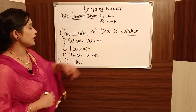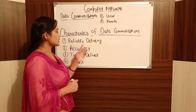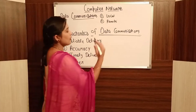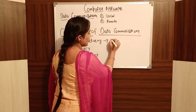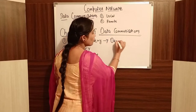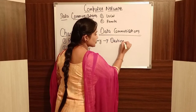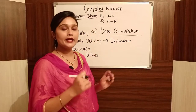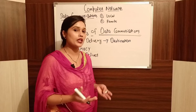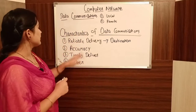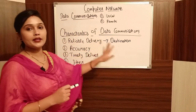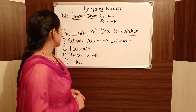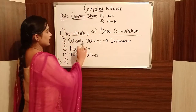Next we have the characteristics of data communication. The first is reliable delivery. Reliable delivery means that when we transfer data to our destination, we have to confirm that the data information actually reached the destination — whether we are reaching out of country or not. Reliable delivery means the data is reliably delivered to the destination.